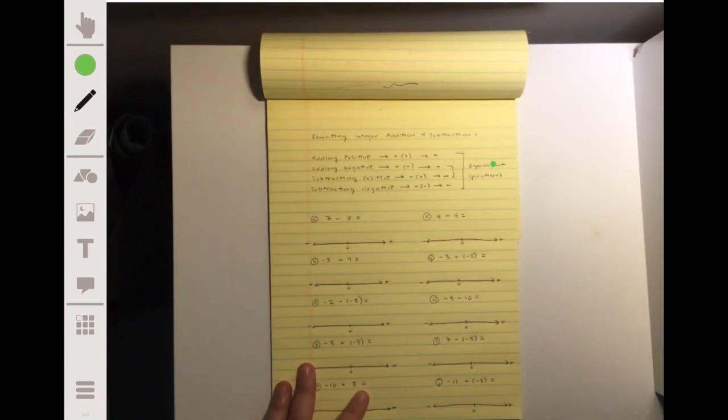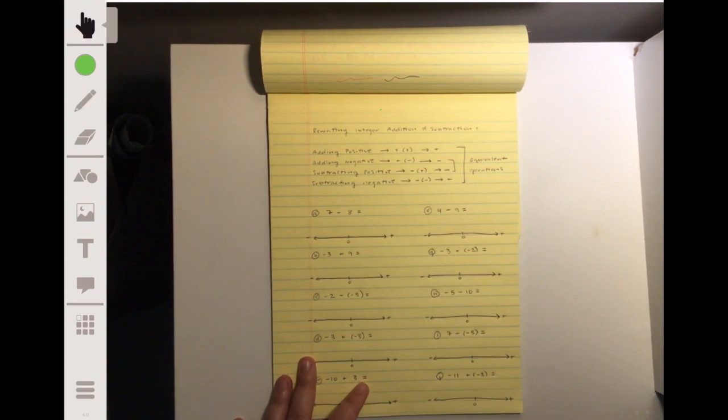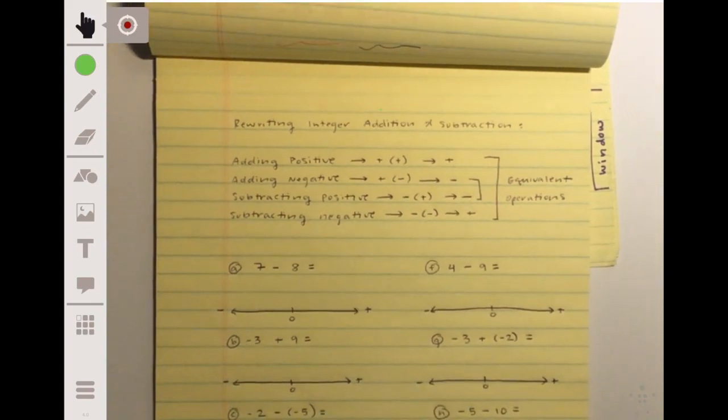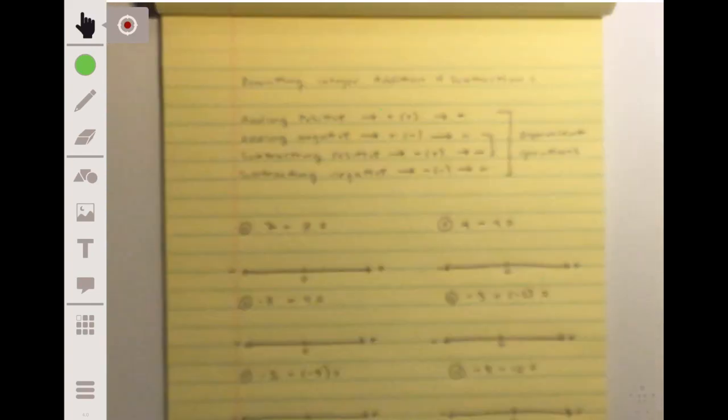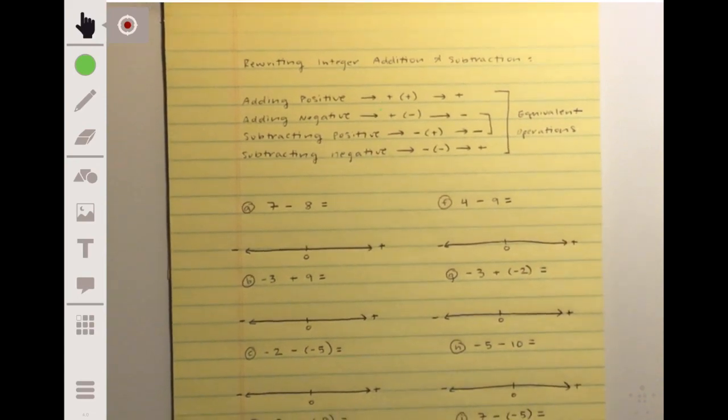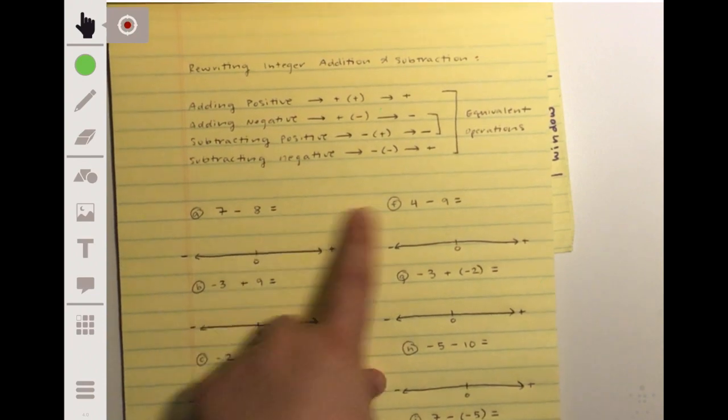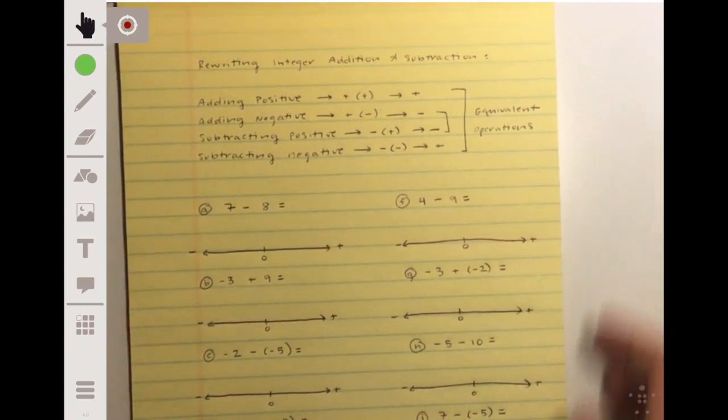Basically, I think earlier in the year when we did integers with counters, the goal was for us to understand them a little bit better. But next year, in reality, you're probably not just going to pull out counters every time you're trying to deal with integer operations. So I'm trying to show you some faster ways and more intuitive ways to figuring out just basic integer operations, integer addition and subtraction, because knowing these tricks might be more beneficial for next year.